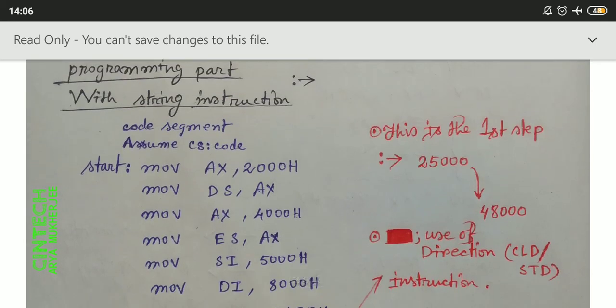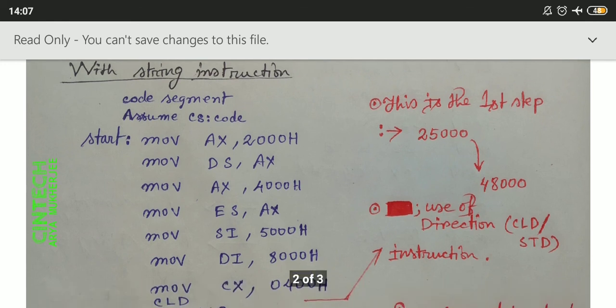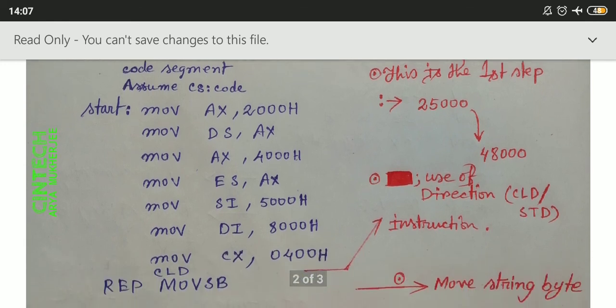The first step is to move all data from the 25000 block location to 48000. So we have to do: MOV AX, 2200h; MOV DS, AX; MOV AX, 4000h; MOV ES, AX; MOV SI, 5000h.